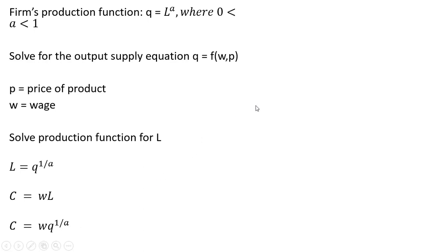The next step is to get marginal cost. So marginal cost is the derivative of the cost equation with respect to Q, the quantity of output. So this 1 divided by A comes down in front, so we just have W over A now. And then we've got to subtract 1 from that exponent on Q.